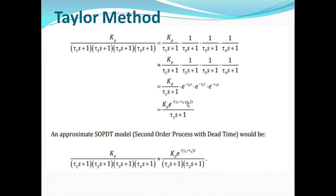The exponent terms get added in a multiplicative manner. This is the formula for Taylor's first order approximation from a higher order system. If we want to approximate to a second order model from a higher order system, the formula is: Kp divided by (τ₁s+1)(τ₂s+1), where the first two time constants come in the denominator, and the numerator will be e raised to minus (τ₃ + τ₄). This is the formula using Taylor's method for determining the second order model.